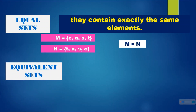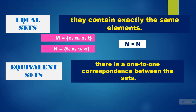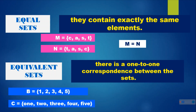Another one is equivalent sets. There is a 1-to-1 correspondence between the sets. For example, set P is equal to {1, 2, 3, 4, 5} and set C is equal to {one, two, three, four, five}. The difference is set P is written in Hindu-Arabic form, but set C is described by word. So they have the same number of elements, meaning there is a 1-to-1 correspondence between the sets, so they are equivalent sets.